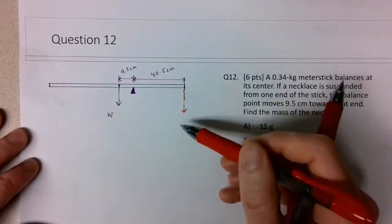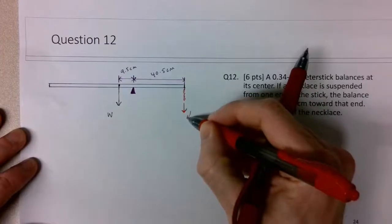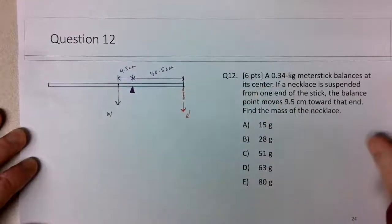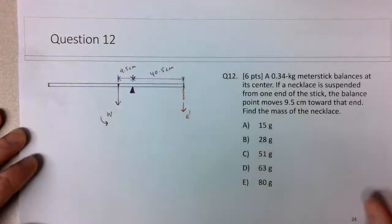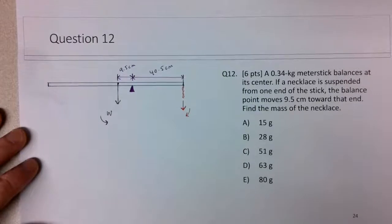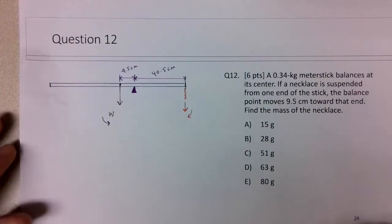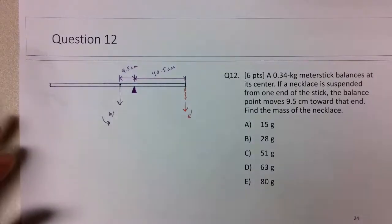So in this particular, the necklace force will cause a clockwise rotation, or a clockwise torque about this pivot point. The weight force will cause a counter-clockwise torque about that pivot point. And these torques must be equal to each other in magnitude, such that the ruler is balanced.